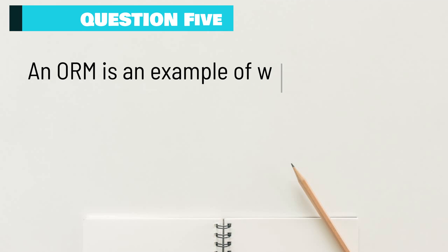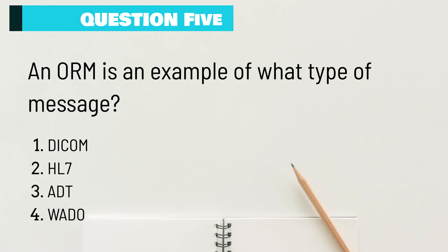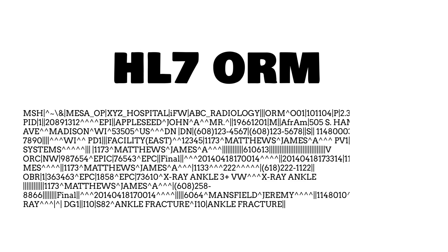Question 5: An ORM is an example of what type of message? A. DICOM. B. HL7. C. ADT. D. WADO. An ORM is an Order Entry Message, which is a Health Level 7, or HL7, message.